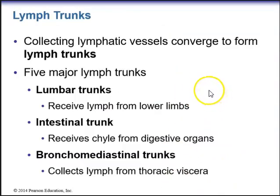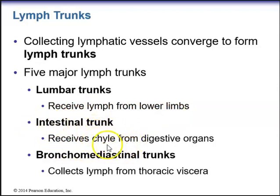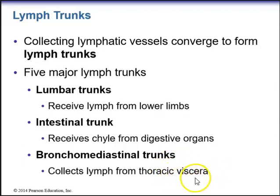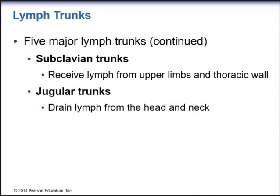Collecting lymphatic vessels converge to form lymph trunks. We have five major lymph trunks: the lumbar trunks receive lymph from the lower limbs; the intestinal trunk receives fatty lymph or chyle from the digestive organs; the bronchomediastinal trunks collect lymph from thoracic organs; the subclavian trunk receives lymph from the upper limbs and thoracic wall; and the jugular trunks drain lymph from the head and neck.